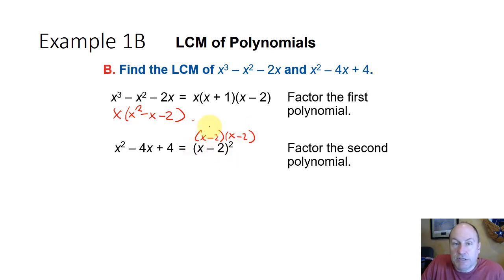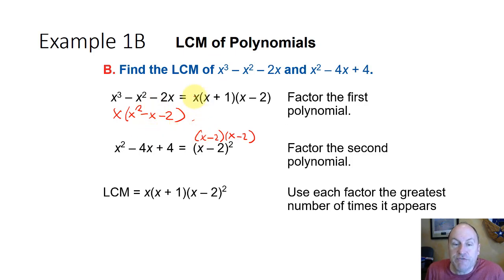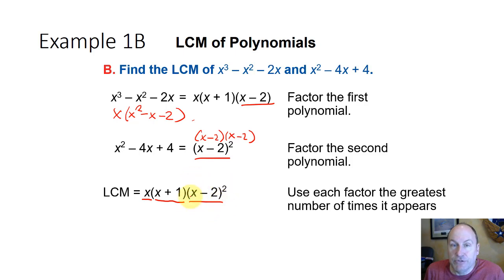So we find the lowest common multiple in a similar way — we use each factor the greatest number of times it appears. x by itself appears once, x plus 1 appears once, and the factor x minus 2 appears once in the first term but twice in the second, so we use x minus 2 to the second power.